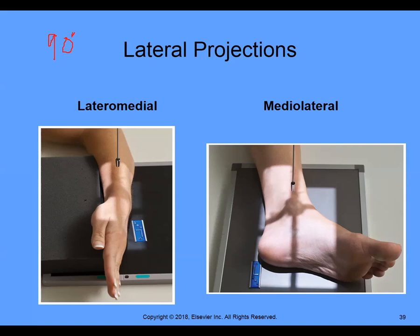This is a lateral projection, and now we describe how the central ray travels through the body. The first digit tells me this is lateral; the fifth digit is medial. So this is a lateral-medial projection of the hand. On the foot, the big toe is medial, and the fifth digit and that side is lateral. So this becomes a medial-lateral projection, because the central ray is traveling from medial to lateral.